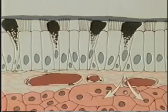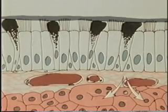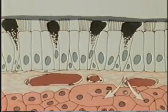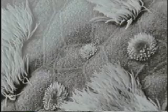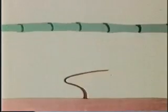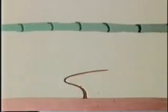Mucus is also produced by the underlying glands. Here is a scanning electron micrograph of the surface of the rat nasal epithelium, showing the cilia which look like clusters of tentacles. This animated diagram represents in a simplified way the beating of a single cilium. Notice that it is straight on the forward or effector stroke and contacts the mucus blanket, and then bends down for the return or recovery stroke.